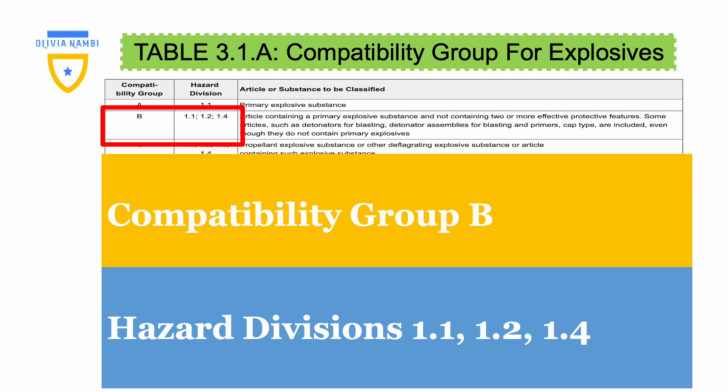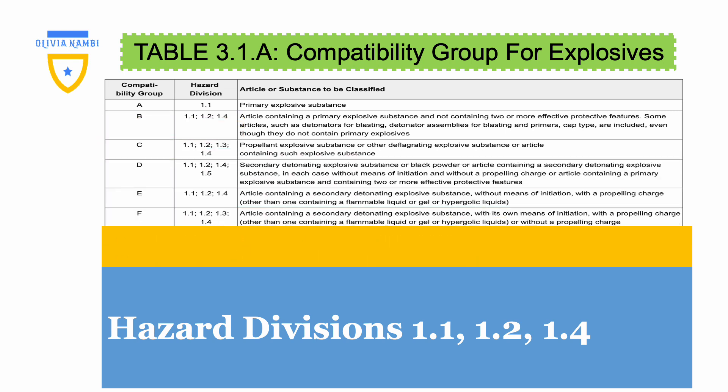Consistency regarding the nature of the explosive is required when denoting the division and compatibility group. These two have to be emphasized throughout the shipment preparation process — that is, on the accompanying documents and hazard labels. We shall take an example of division 1.4B.